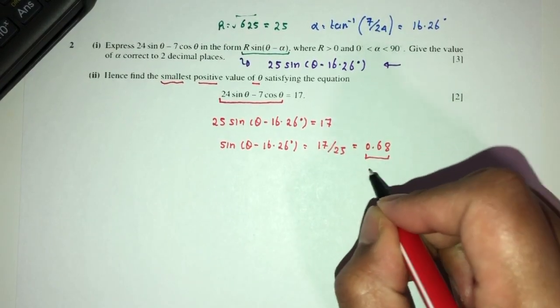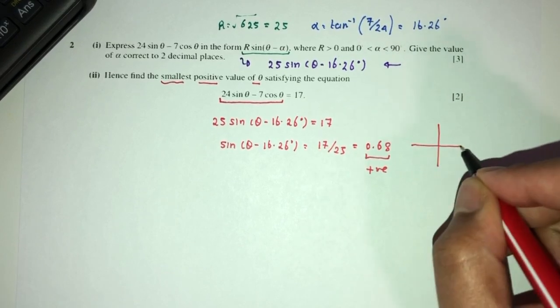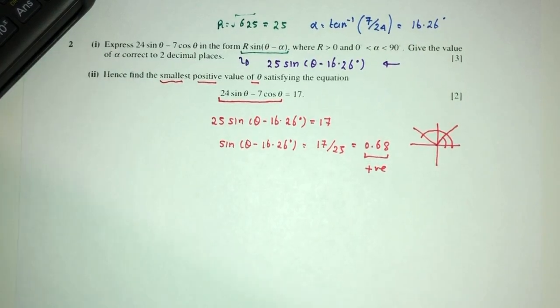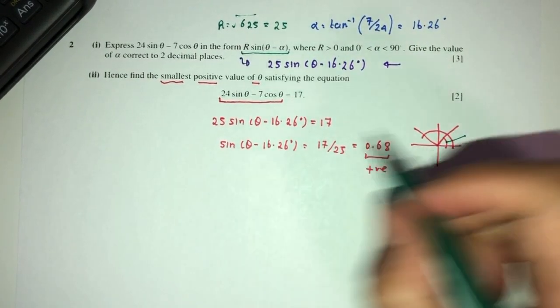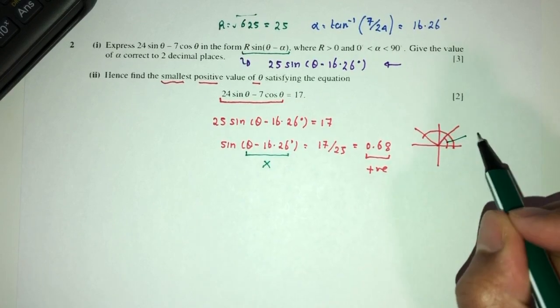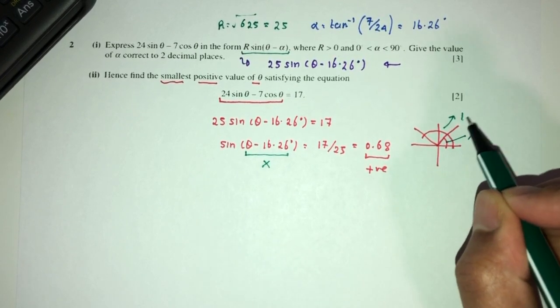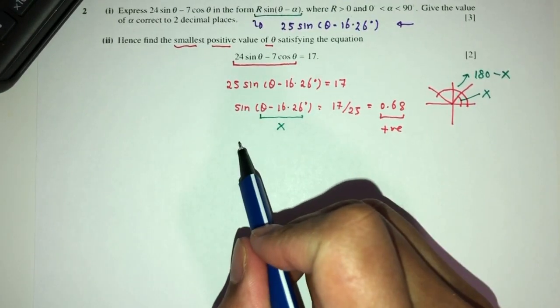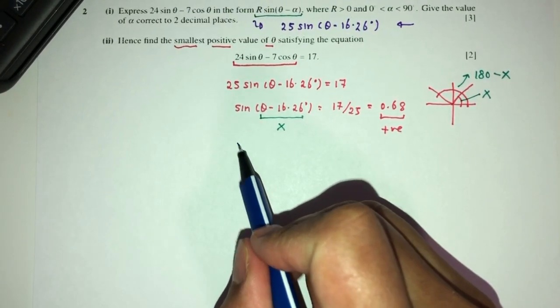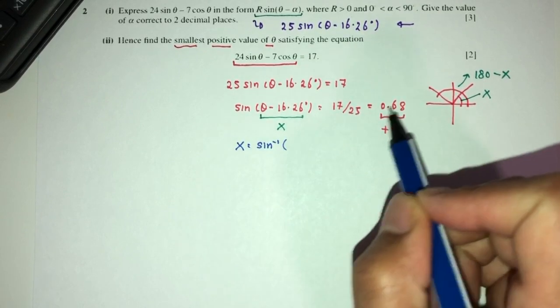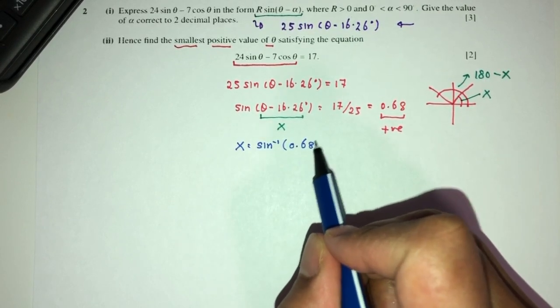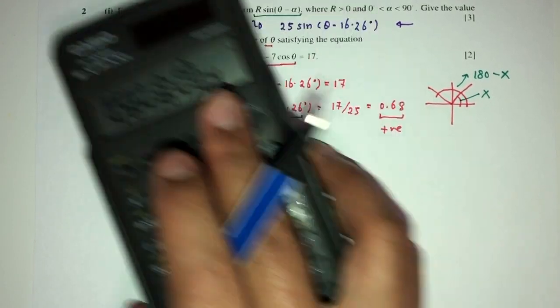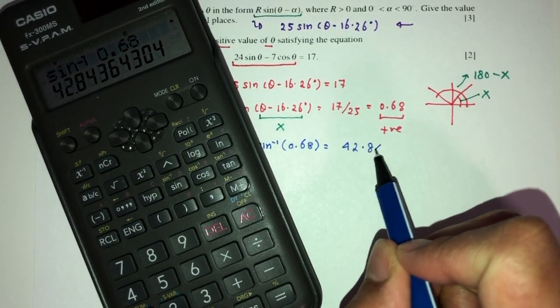As you can see, this is a positive value. So we can say, since it is positive, it has to be in the first quadrant or in the second quadrant. This will be your value of your angle directly. This one, let's call this x, x directly or the value will be 180 minus x. So to find the value of x, the angle is x. I'm calling this x for now, is equal to sin inverse of the value 0.68. That will be 42.84 degrees.